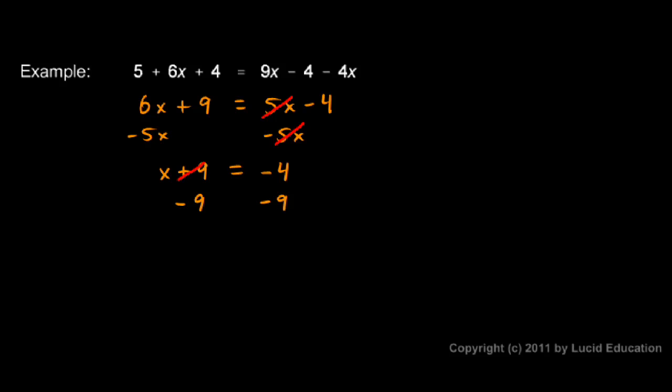The plus 9 and the minus 9 on the left cancel each other out. So on the left I just have x. On the right I have negative 4 minus 9, and that's negative 13. So the equation is solved. I know x. It's negative 13.